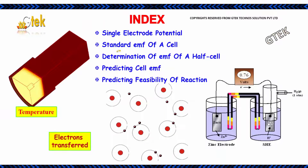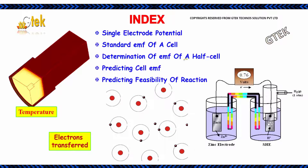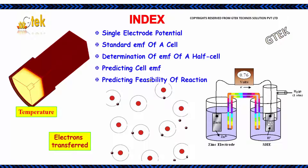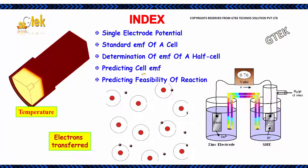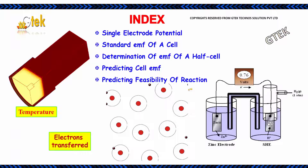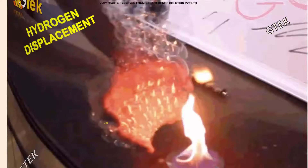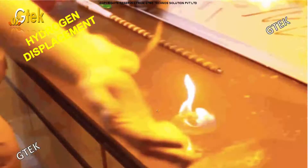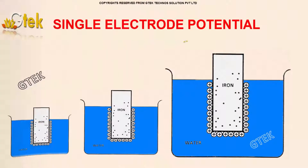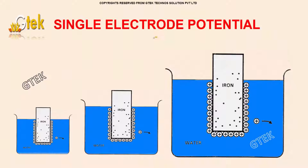We are going to discuss and deal about single electrode potential, standard EMF of a cell, determination of EMF of a half cell, predicting the cell EMF, the feasibility of reaction, standard EMF of a cell, hydrogen displacement, and the single electrode potential.